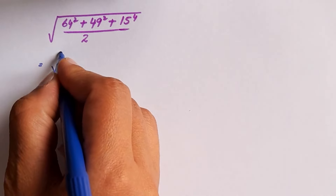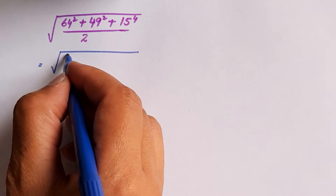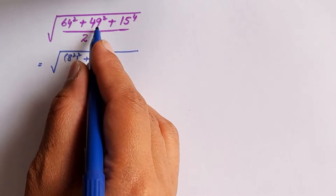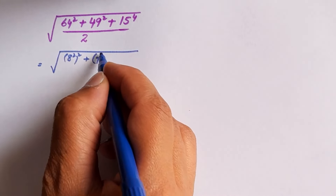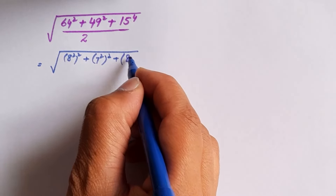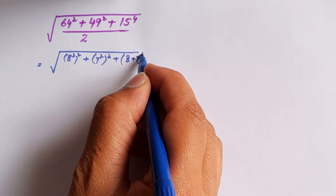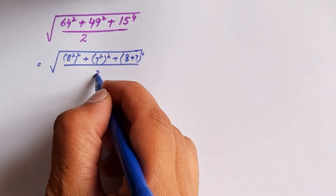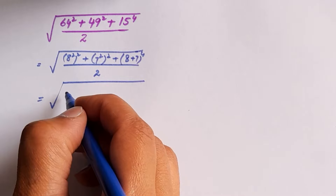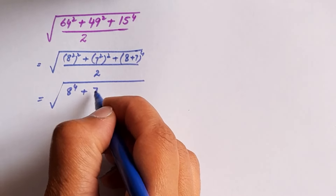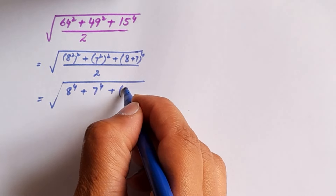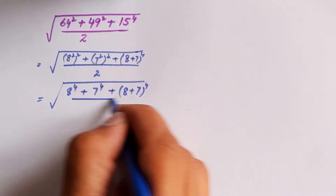The given expression is the square root of 64 to the power 2 plus 49 to the power 2 plus 15 to the power 4, all divided by 2. We can rewrite this as: 64 is 8 squared, so 8 squared whole power 2; 49 is 7 squared, so 7 squared whole power 2; and 15 can be written as 8 plus 7, whole power 4, divided by 2.